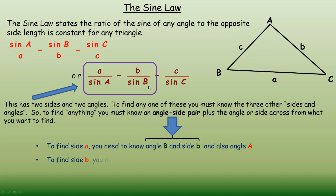If instead you wanted to find side B, then you would need to know angle A and side A — that's the angle-side pair — and you would also need to know angle B, since you need the angle across from the side you're trying to find.